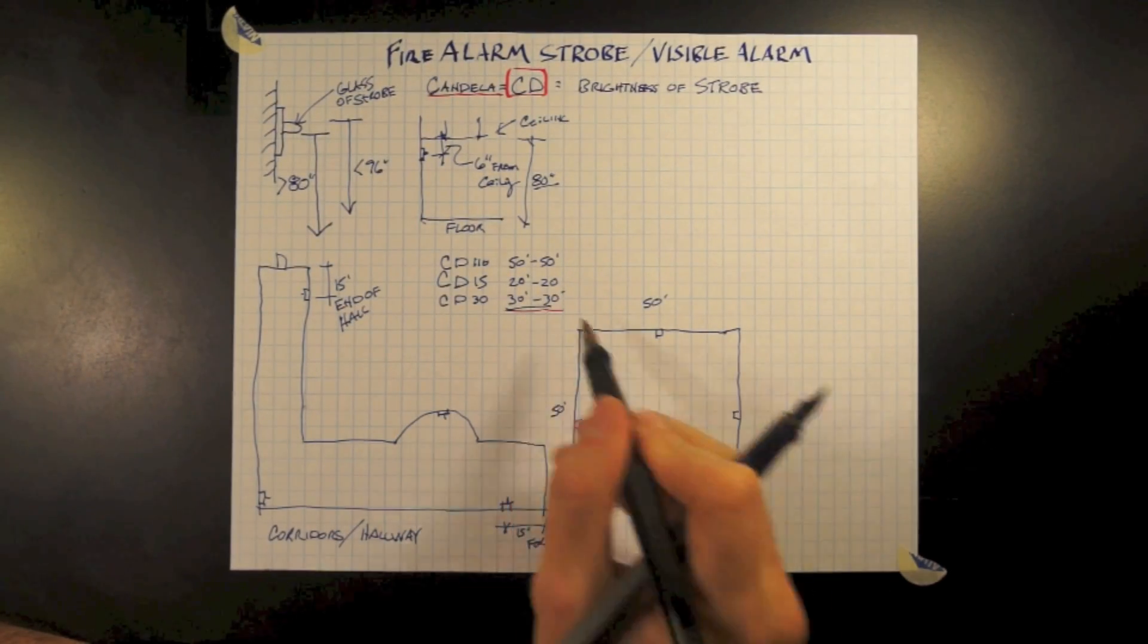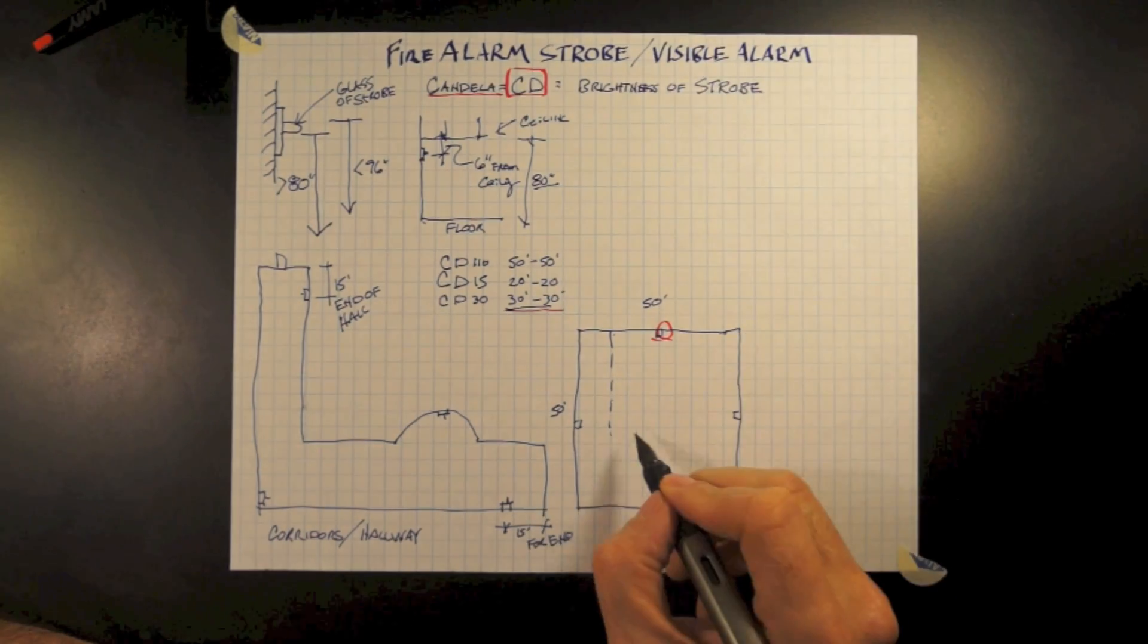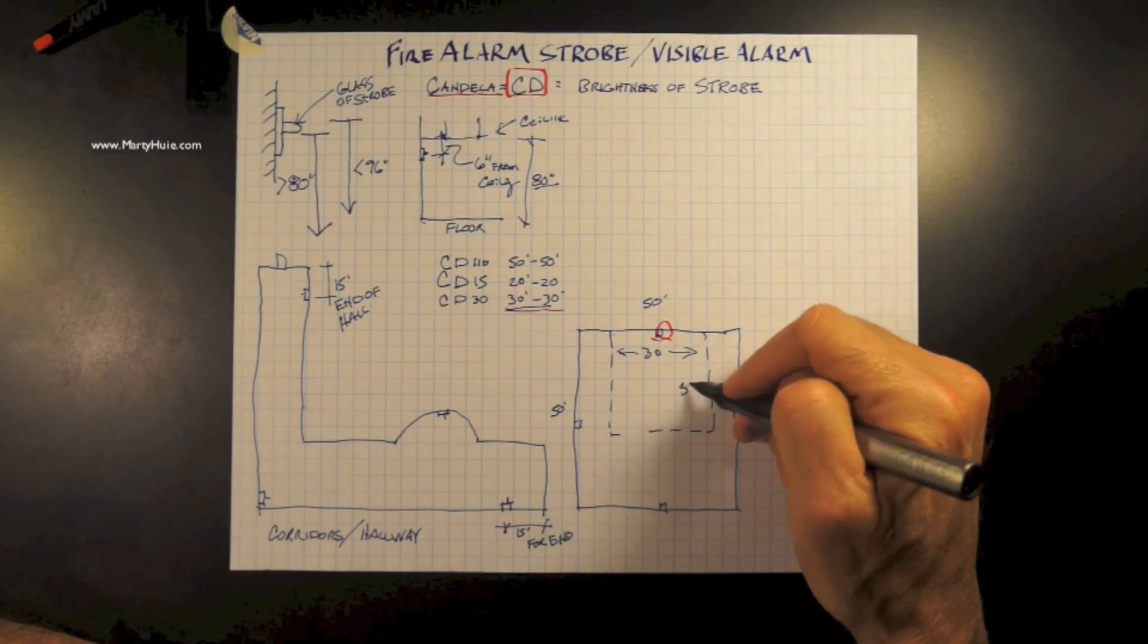So placing the strobe in the middle of the wall, we have a coverage of 30 feet to 30 feet, approximately 10 feet from either side.